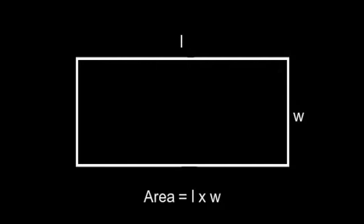For a rectangle with length L and width W, the area is length times width. The units are square units — so if the length and width are in centimetres, the area is in square centimetres; if they're in inches, the area is in square inches.